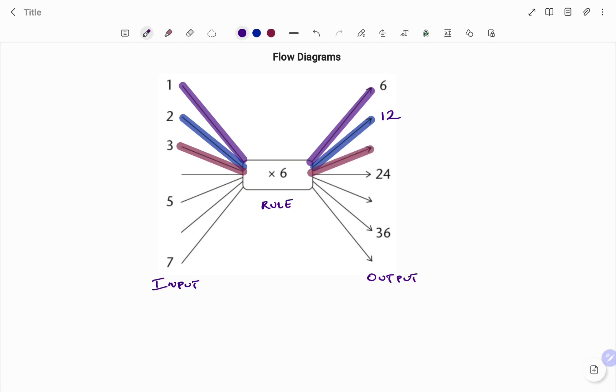I'm going to draw my line. That's my input. I'm multiplying by six and then my output will be three times six which is eighteen. Now you can see we have a missing value in the third input.